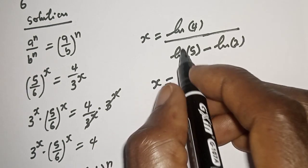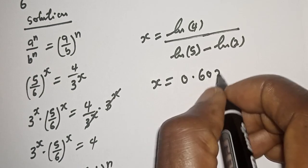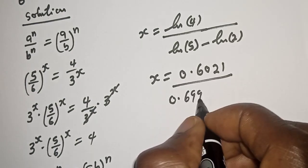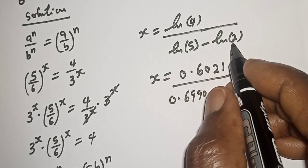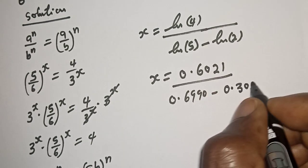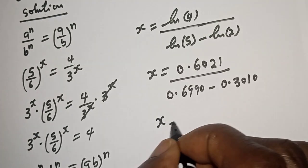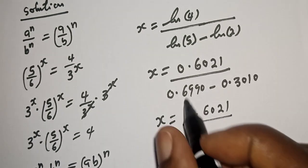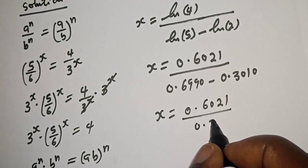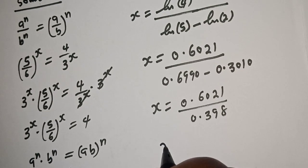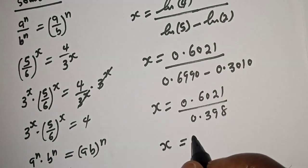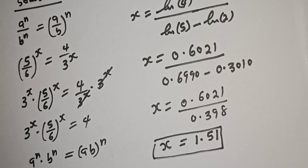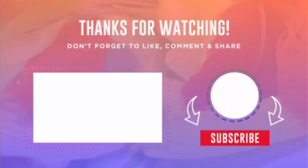S is equal to natural log of 4, which is 0.6021, divided by natural log of 5, which is 0.6990, minus log of 2, which is 0.3010. So s equals 0.6021 over 0.398, which gives s approximately equal to 1.51. This is the final answer. If you enjoyed the class, please don't forget to like, share, comment and subscribe. Thank you.